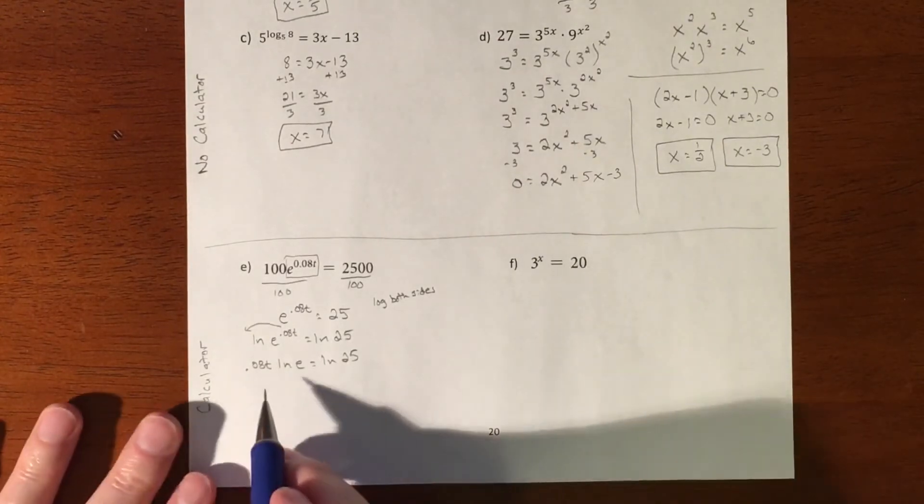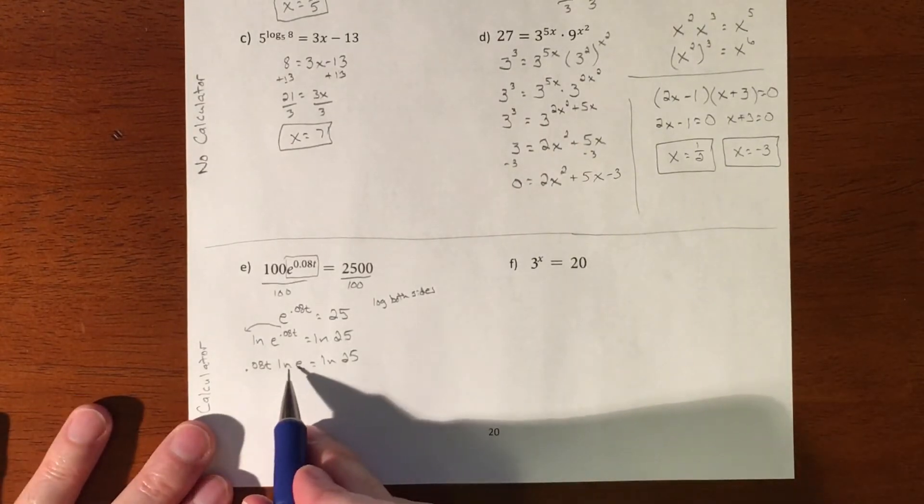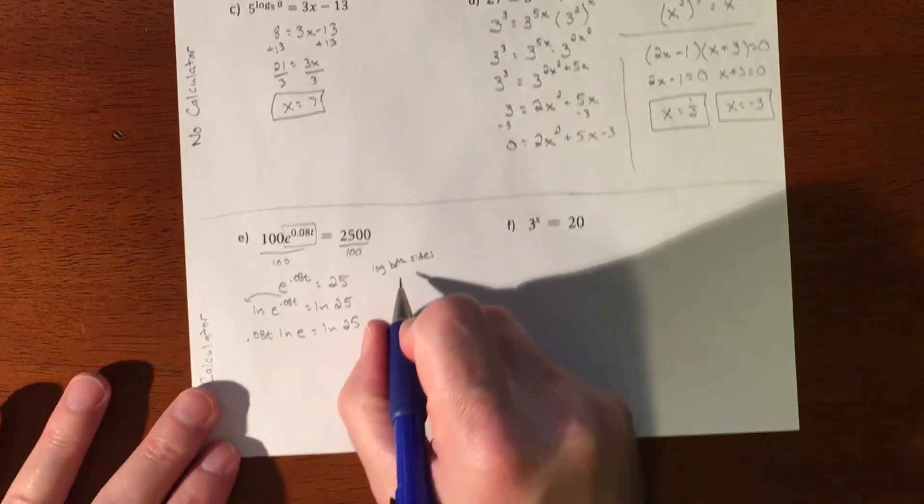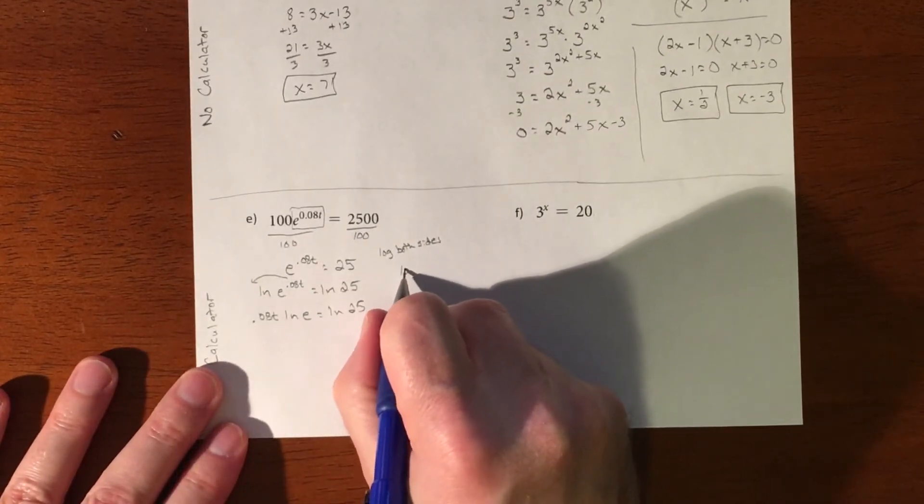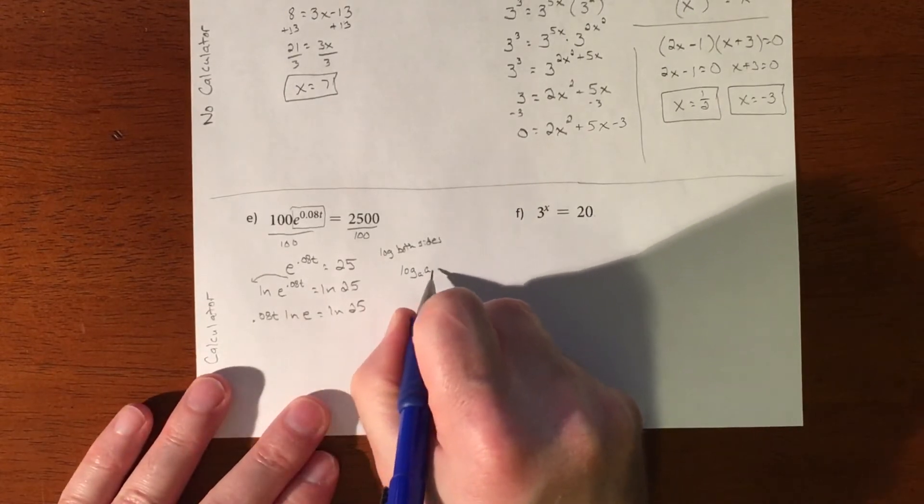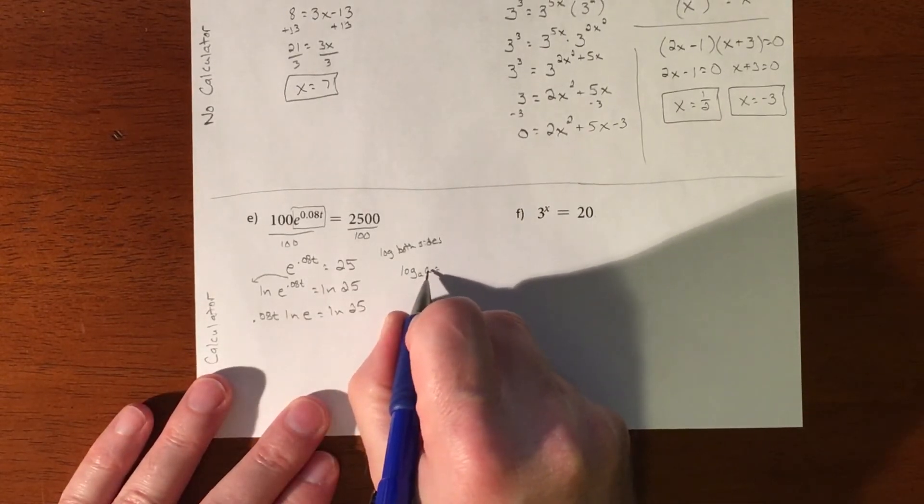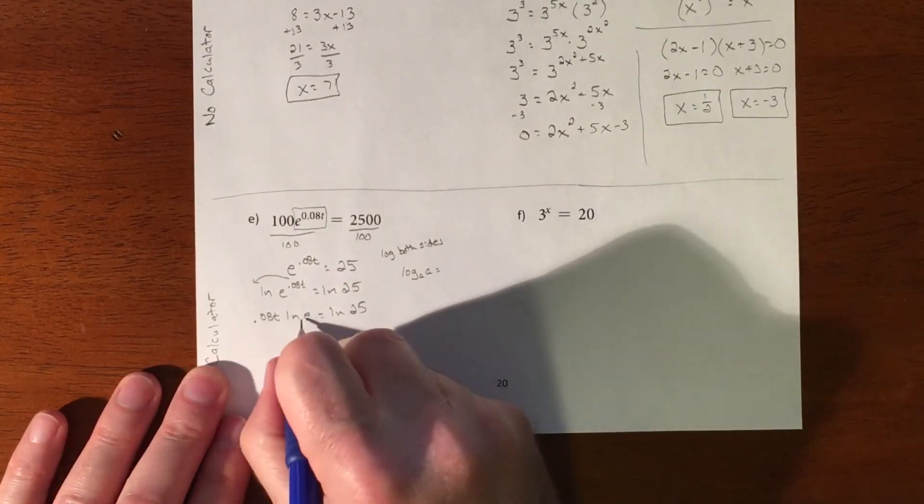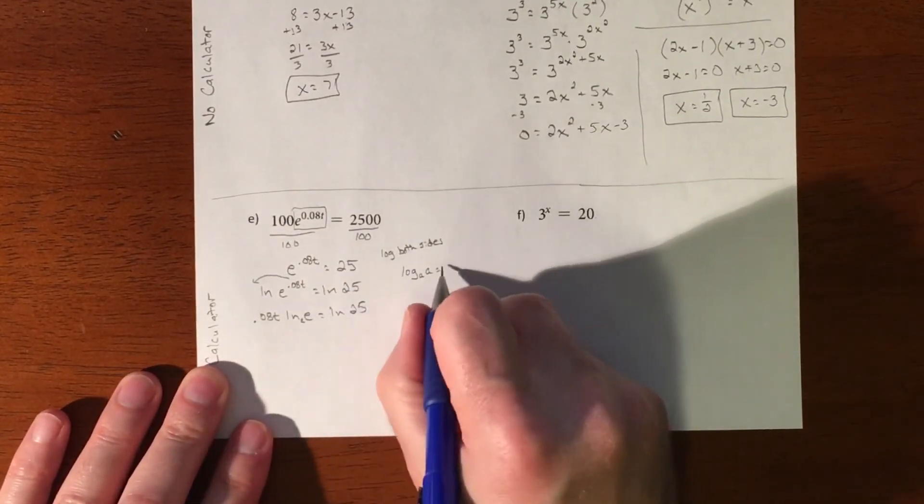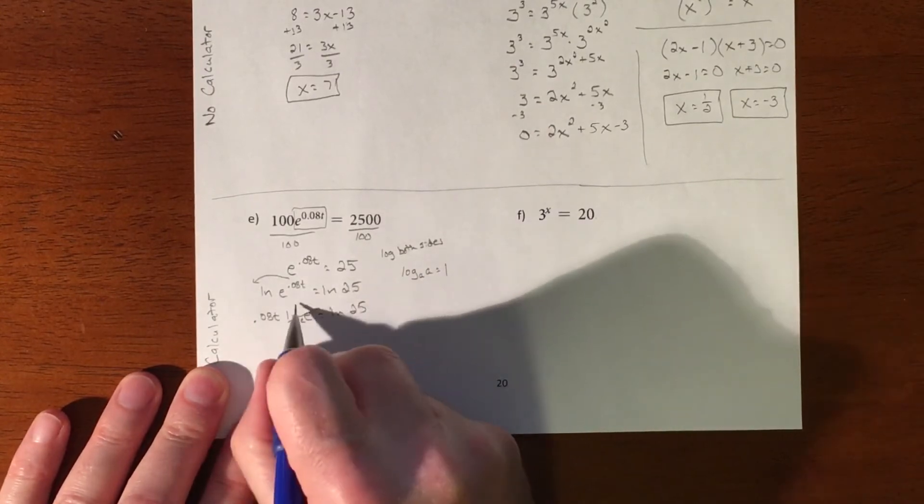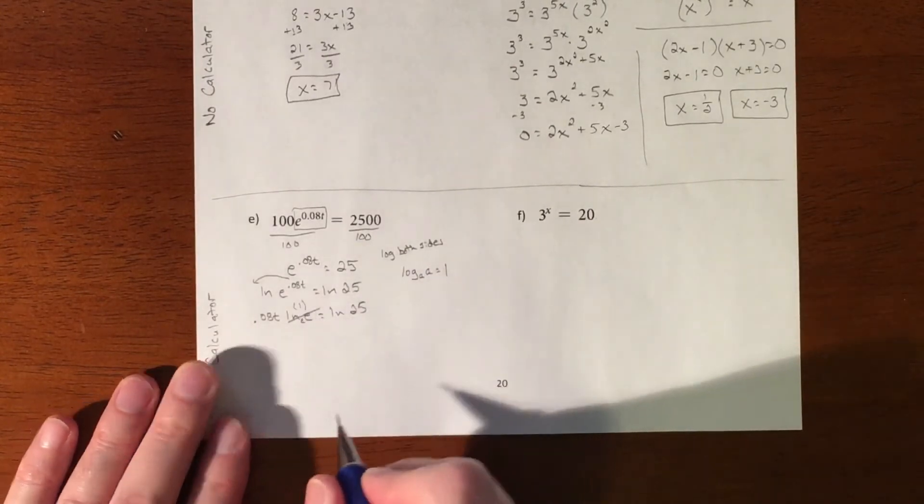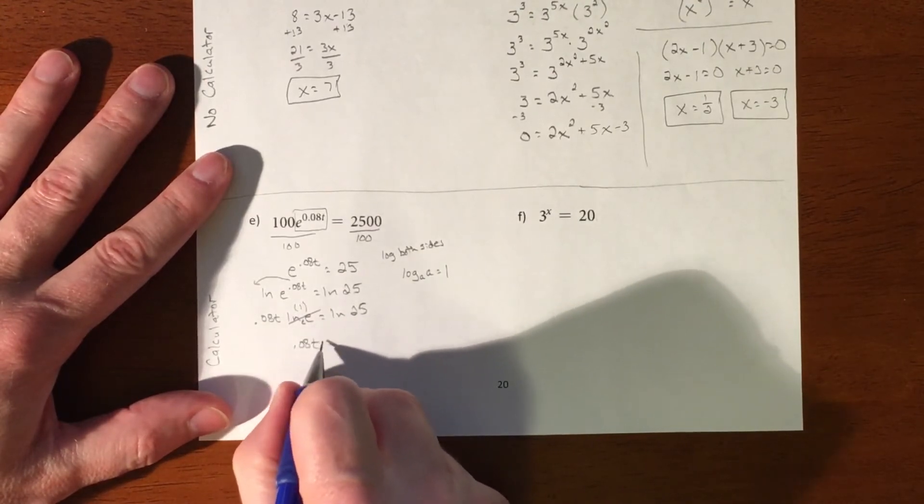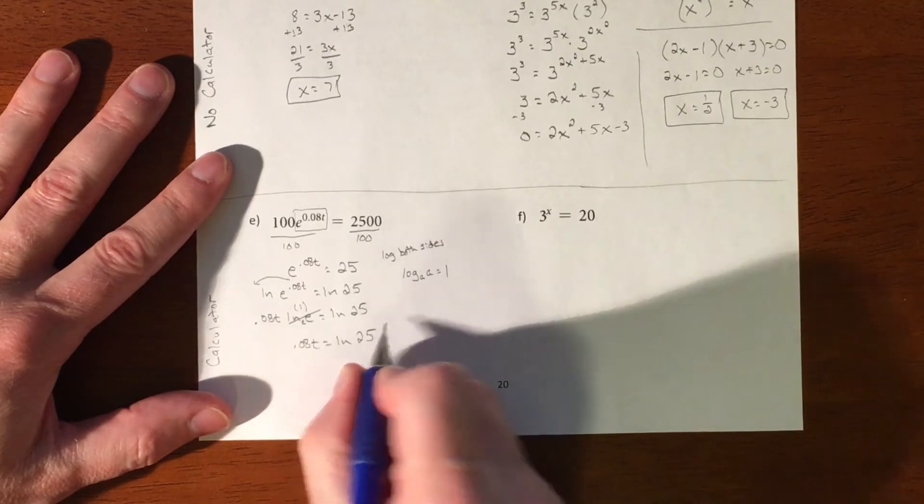So we log both sides. And another thing here is there's a property on logs that if you have log where the base matches the number and the natural log's base is E. So this is an E, it just equals one. So this piece just pretty much goes away. So now you're left with 0.08 T equaling the natural log of 25.